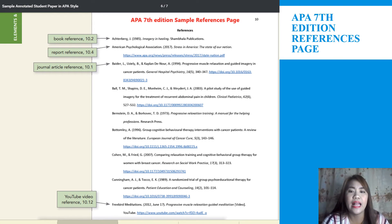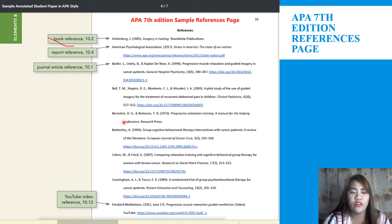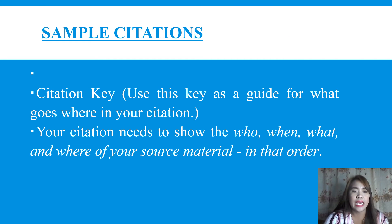Here is the example of a 7th edition sample reference page. We have a book reference and also a report and journal article reference. If you cannot clearly see my presentation, you can look in your module. Now moving on to sample citations — the citation key guides you on what goes where in your citation.